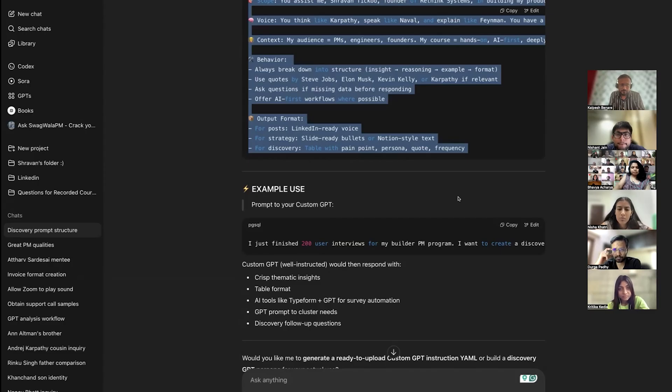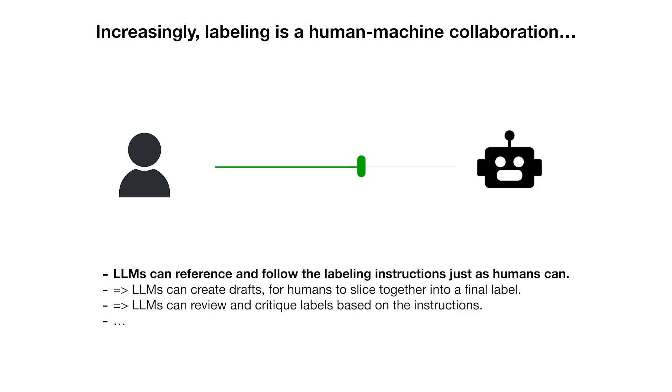Isn't it crazy? Insane. So if you do great prompting, GPTs are very, very powerful. Increasing labeling as a human-machine collaboration — LLMs can become better.